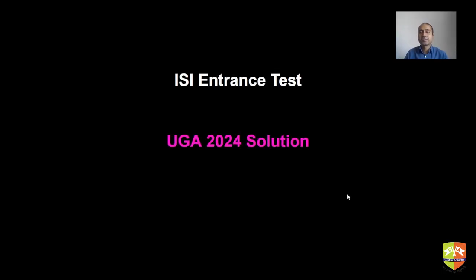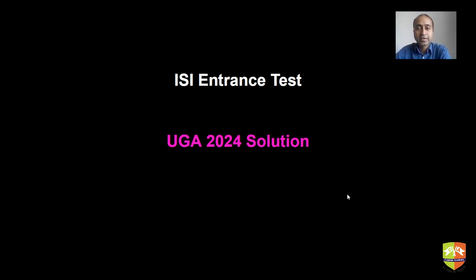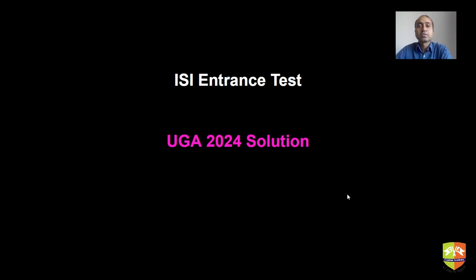Hello and welcome everyone. In this video we are going to see the solutions of the ISI entrance test. It has two parts: one is objective with 30 questions and the other is subjective with 8 questions. The objective portion is called UGA, held on 12th May. This is useful not only for students who took the exam, but also for those preparing for JEE Main/Advanced who are interested in maths. The level of many questions is similar to JEE Advanced, involving lateral thinking and out-of-the-box problems.